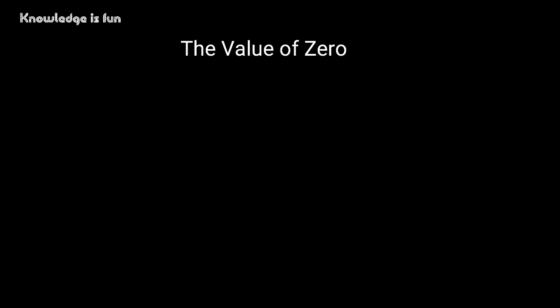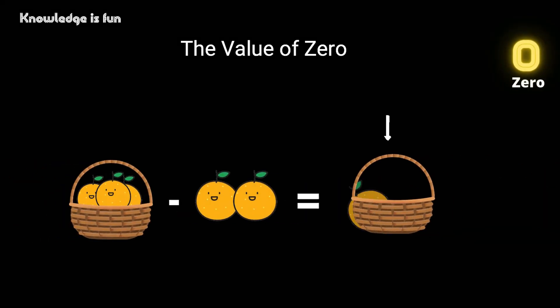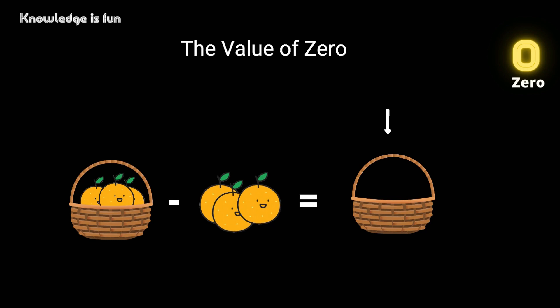Now what is the value of zero? If you have three oranges in a basket and then you eat up all the three oranges in that basket, what do you have? You have zero oranges. So it means zero has a value in that sense.